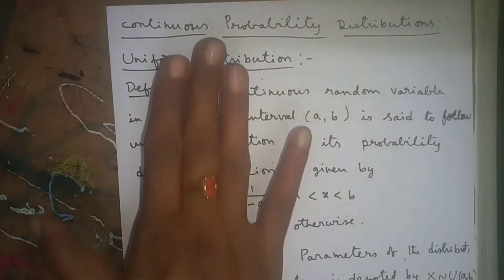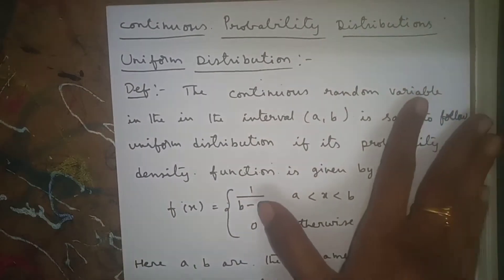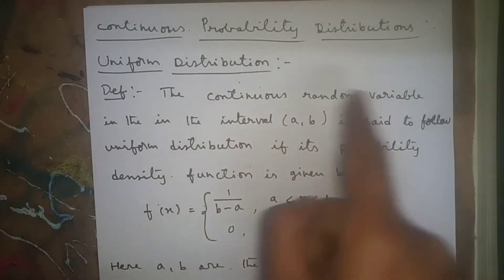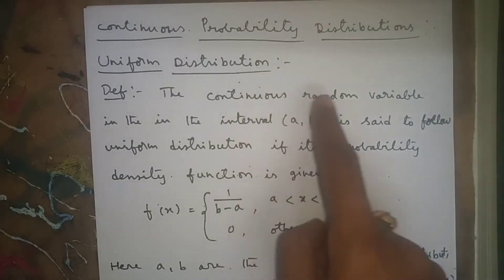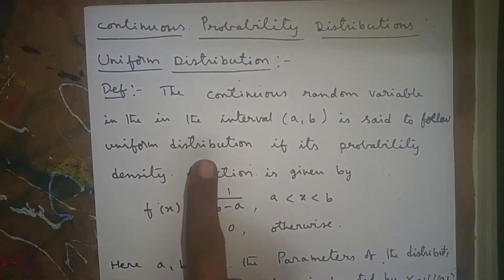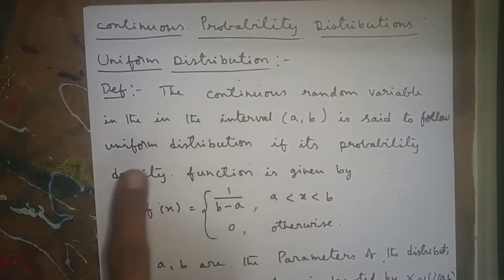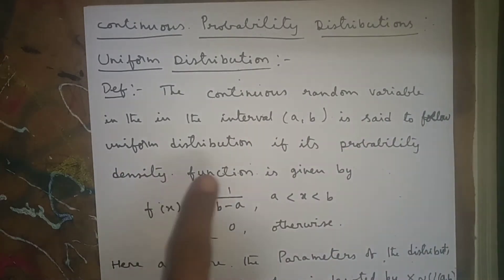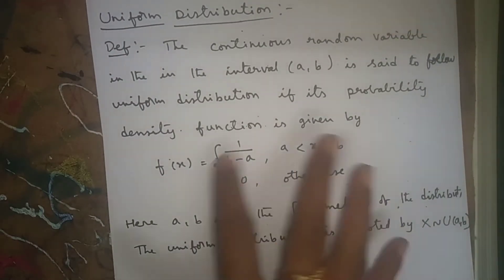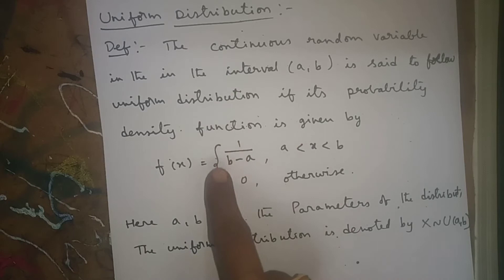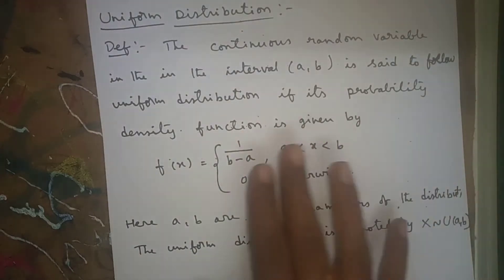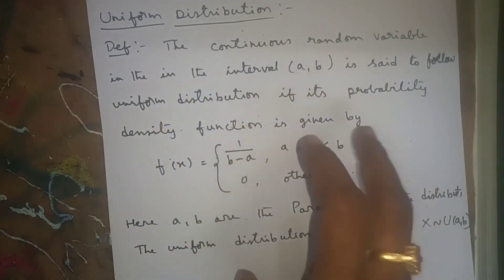Now, first coming to the uniform distribution — we will see the definition. A continuous random variable in the interval (a, b) is said to follow a uniform distribution if its probability density function is given by: f(x) = 1/(b − a) for x between a and b, and 0 in the remaining cases.